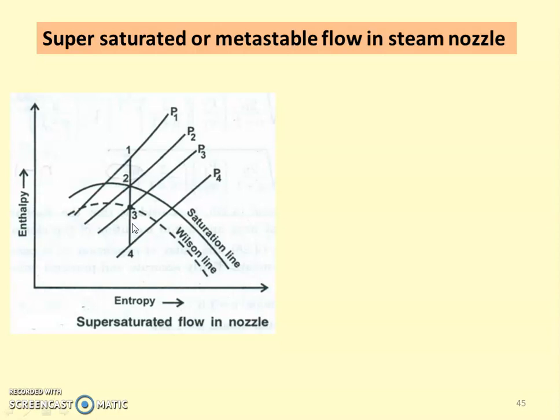The reason is very high steam velocity. The condensation process requires vapor molecules to join together and form a water molecule. Because the velocity is very high, the steam is moving with very high speed. The time available for vapor molecules to join together and become a liquid molecule is reduced, so condensation is delayed. The steam continues as dry saturated steam up to point three, and only after point three does it become wet steam.